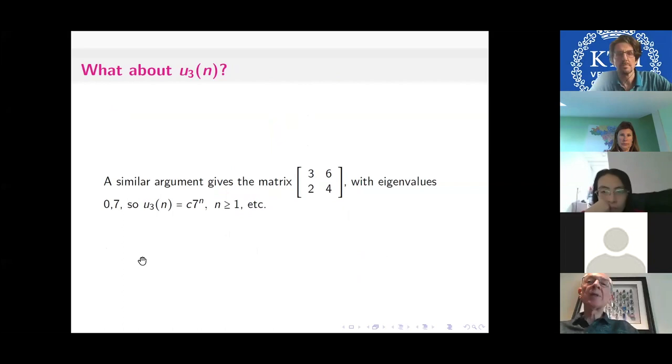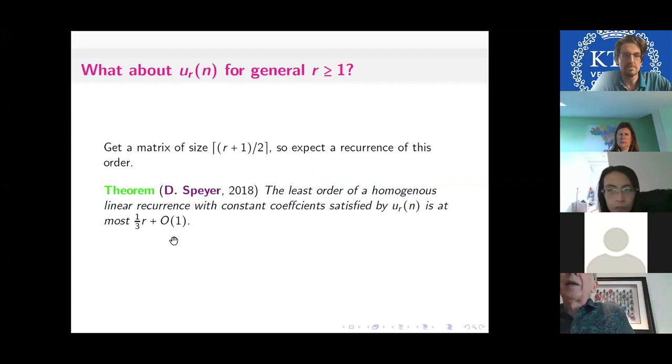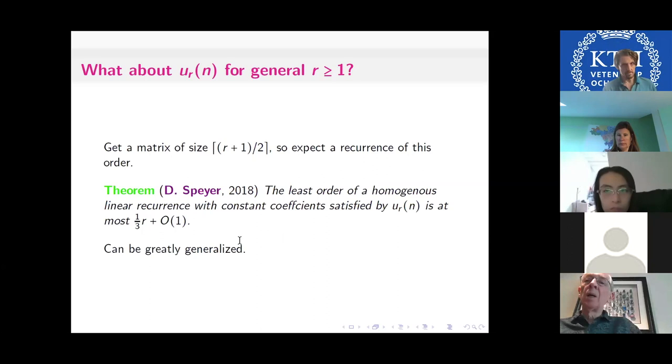For sums of cubes, we go through the same procedure and now we'll get this matrix. It happens to have an eigenvalue equal to zero. That's why we've got a simpler answer for the sum of cubes. Only the seven becomes relevant. Only the eigenvalue seven is relevant when n is greater than or equal to one. So it's some constant times seven to the n. When you do this in general for rth powers, this method will give a matrix of size about r over two. In fact, I have an exact formula for the order of smallest order of this recurrence. David Speyer showed that this is an upper bound on the order of the recurrence by a very clever argument. All of this can be greatly generalized to much more general recurrences.